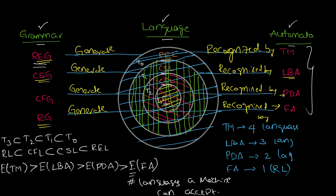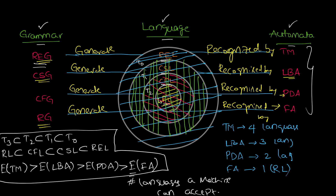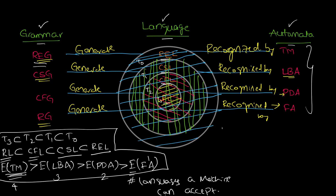Here, expressive power is defined as the number of languages a machine can accept. To summarize this table: regular languages are a subset of CFLs, which are a subset of CSLs, which are a subset of recursive enumerable languages, and the Turing machine is more powerful than any other automata.